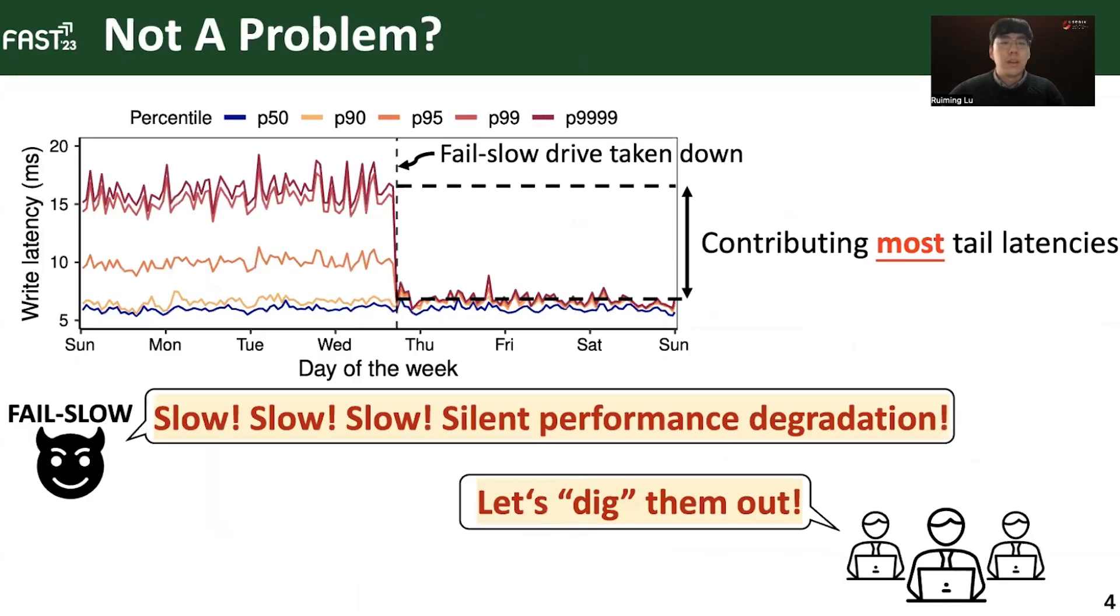Here is the tail latency of a storage node with one known fail-slow drive. As we can see, the node-level tail latency returns to normal after the fail-slow drive was taken down for manual inspections. In practice, most fail-slow failures are already hidden in the storage systems, silently contributing to high tail latencies while remaining undiscovered for a long period of time. Such silent performance degradation motivates us to detect fail-slow failures in large-scale storage systems.